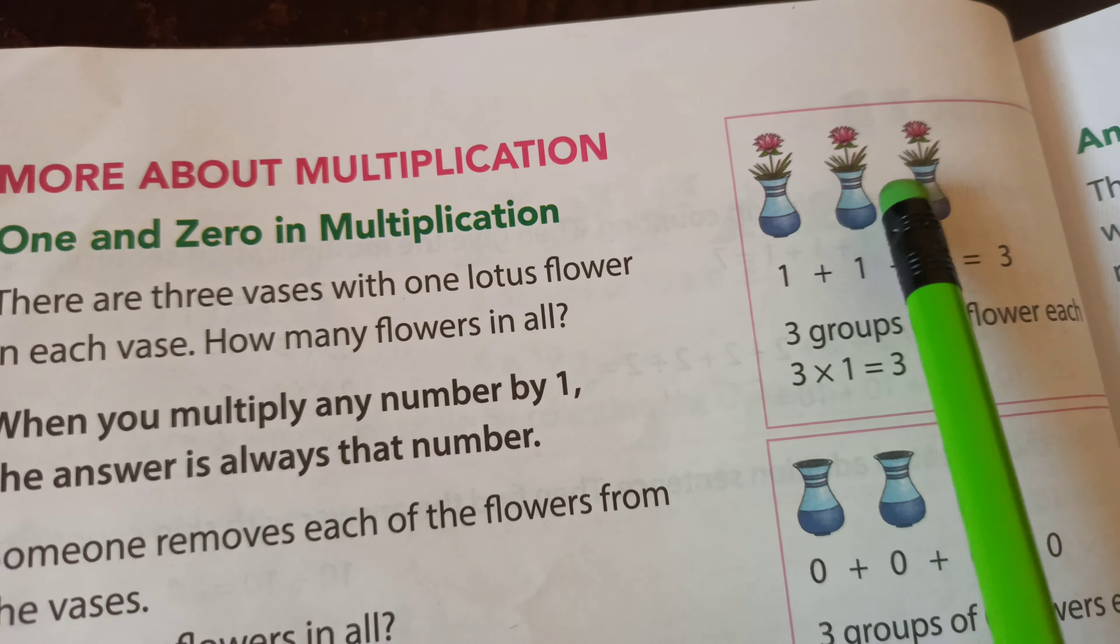One and zero in multiplication. There are 3 vases - you can see 1, 2, 3 vases with 1 lotus flower on each. How many vases? 3. In each vase, 1 lotus only. How many flowers in all? 1 plus 1 plus 1 equals 3 flowers. When you multiply any number by 1, the answer is always that number.